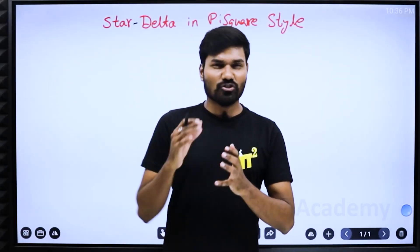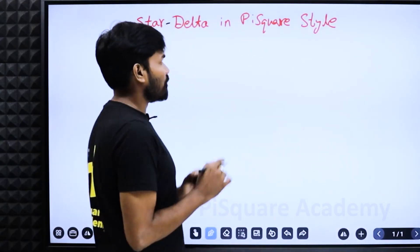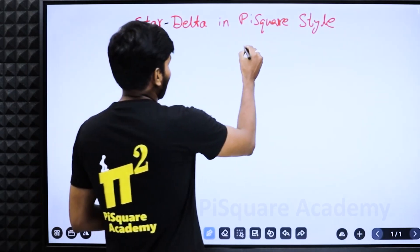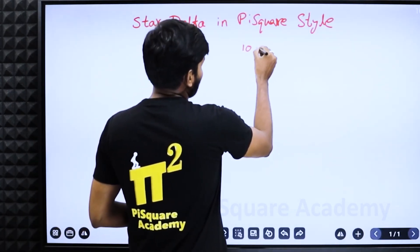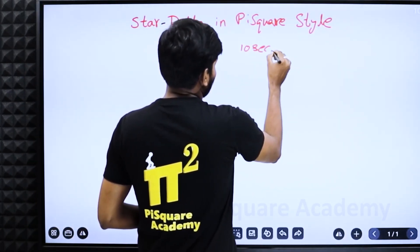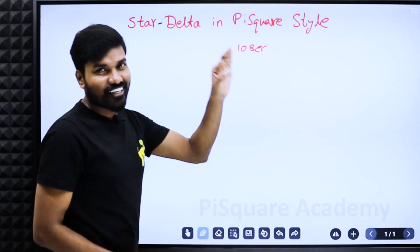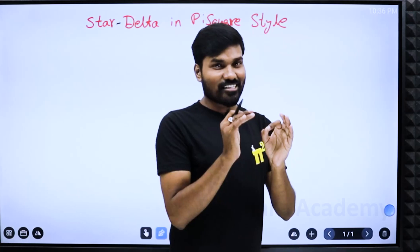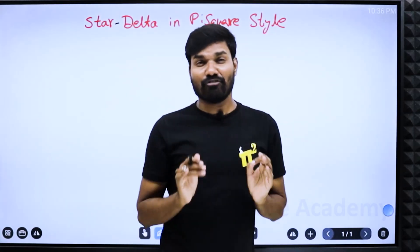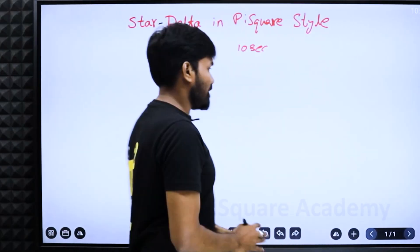Start delta conversion. Most of the students are having difficulty, but now in Pi-square style, in just 10 seconds you will be able to convert star to delta and delta to star. Yes, in 10 seconds without remembering any formula, in the simplest possible way.